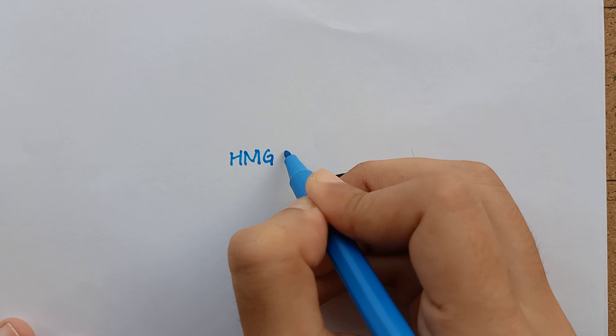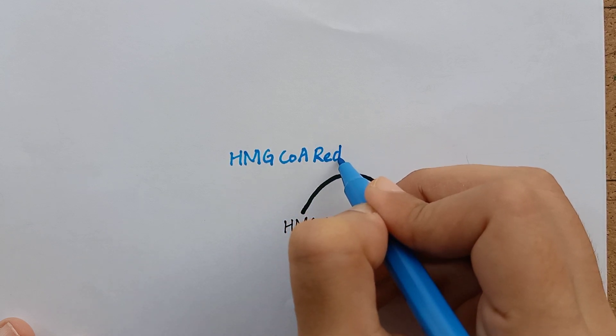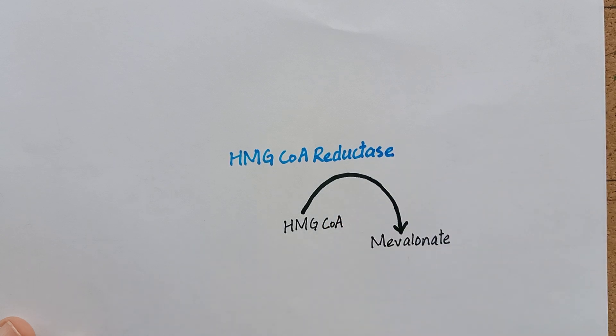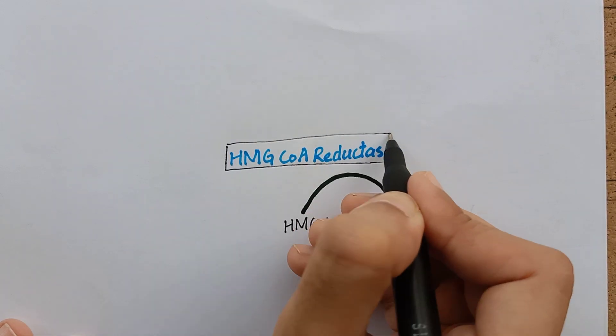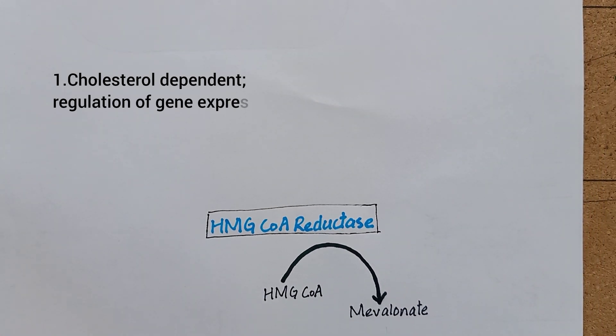This is the rate-limiting step and HMG-CoA reductase is the rate-limiting enzyme of cholesterol synthesis. It regulates the whole process of cholesterol synthesis by different kinds of metabolic controls. One of them is cholesterol-dependent regulation of gene expression.